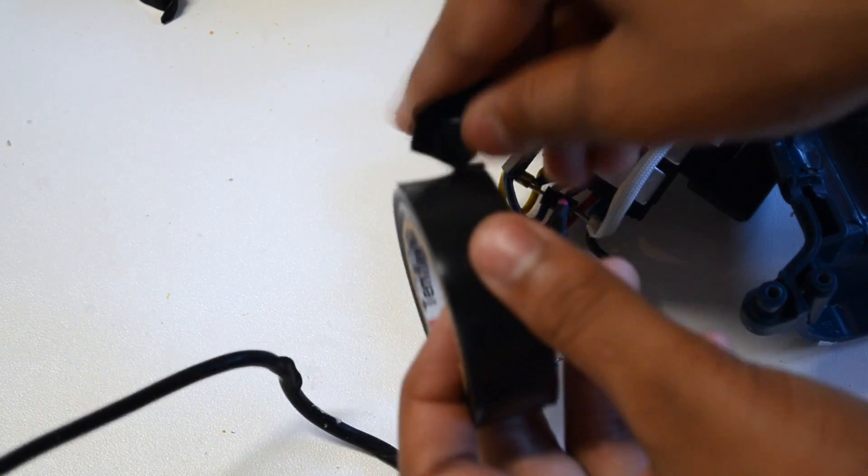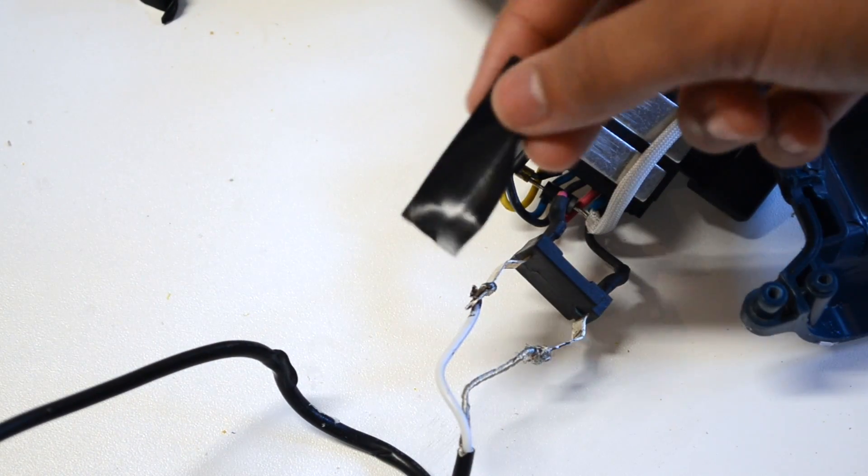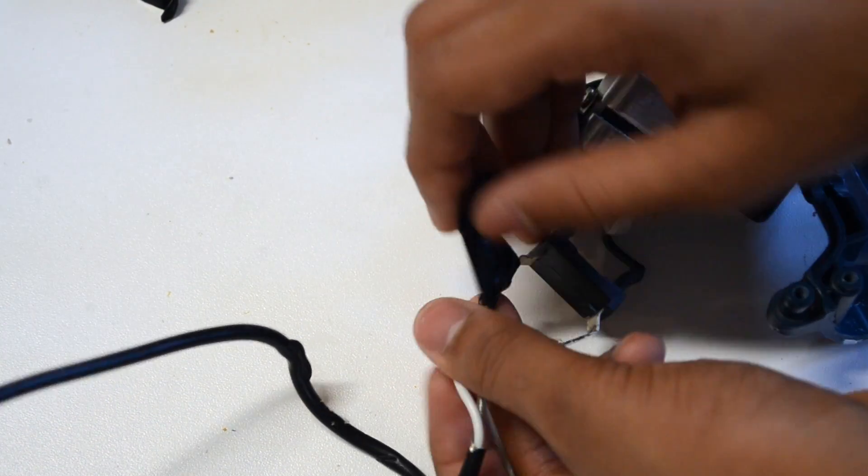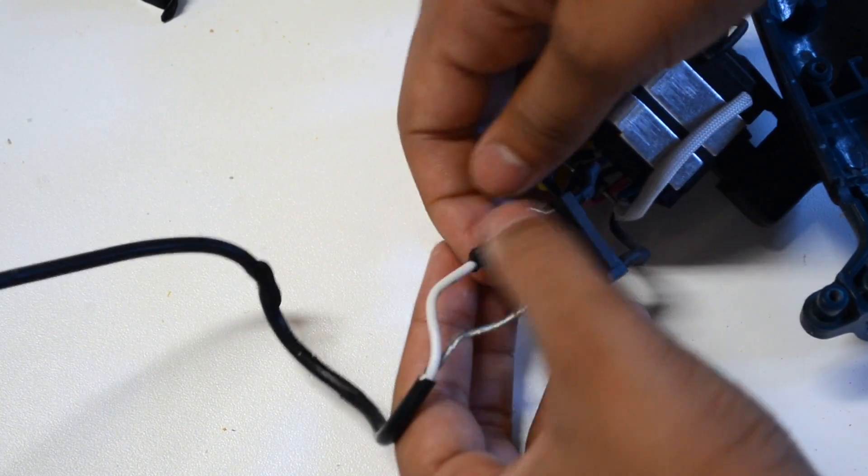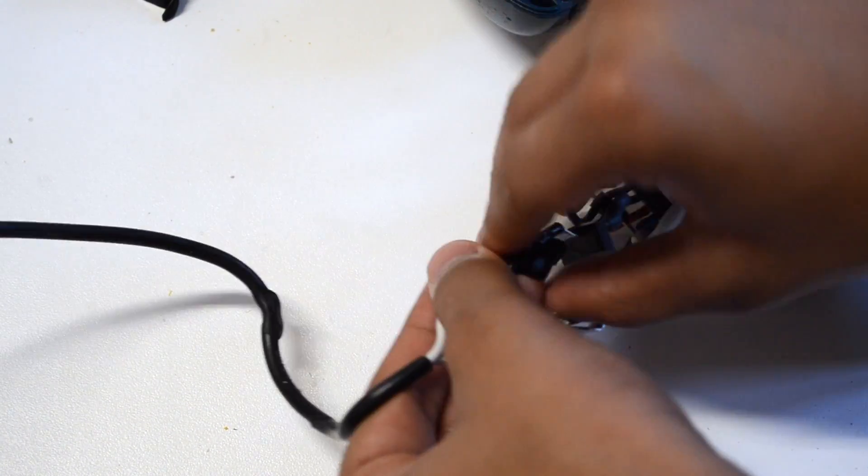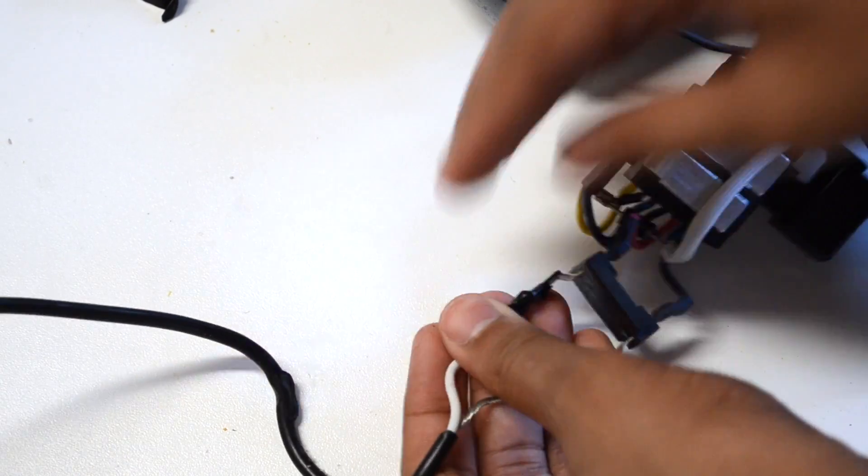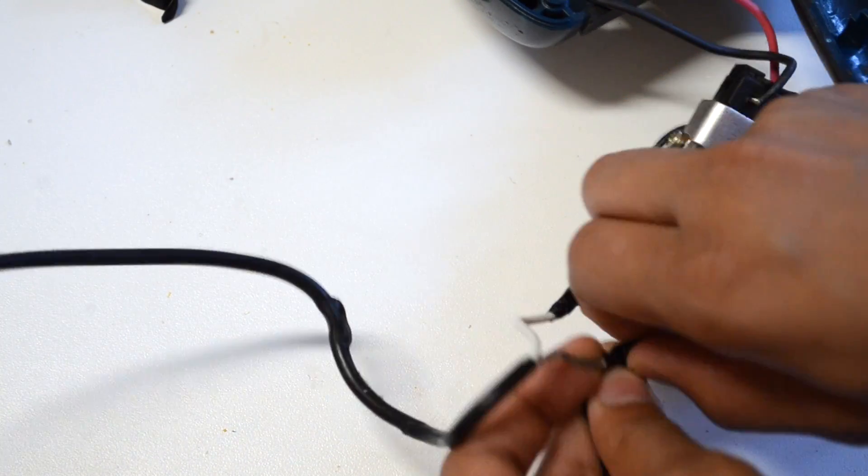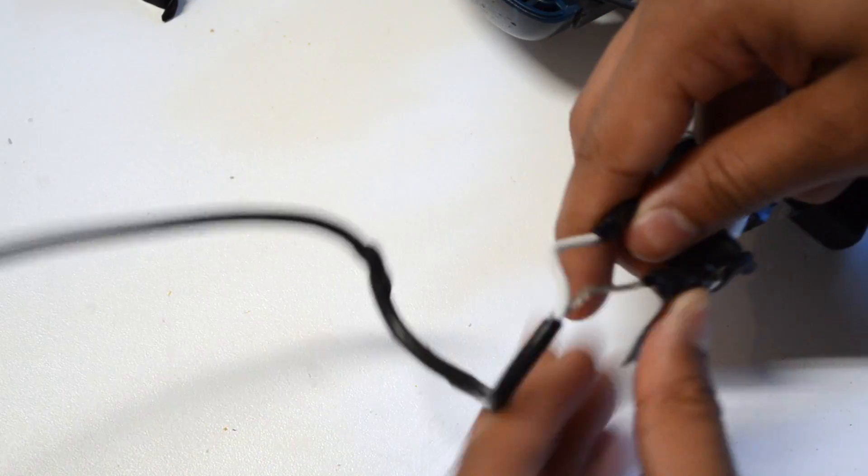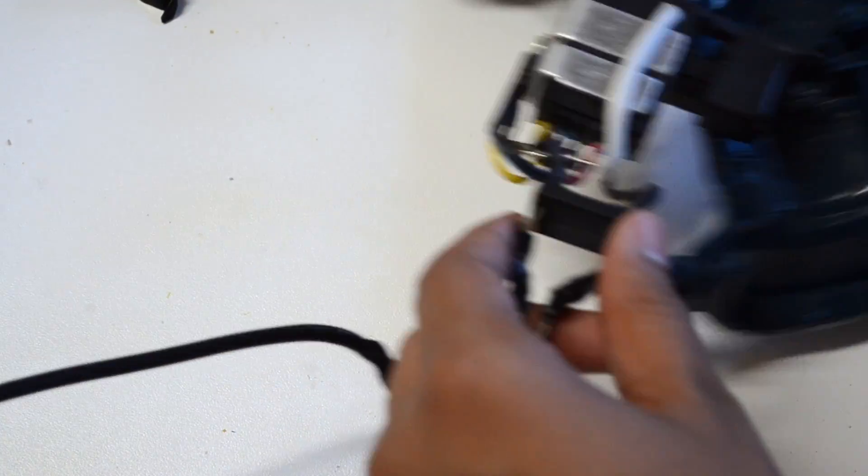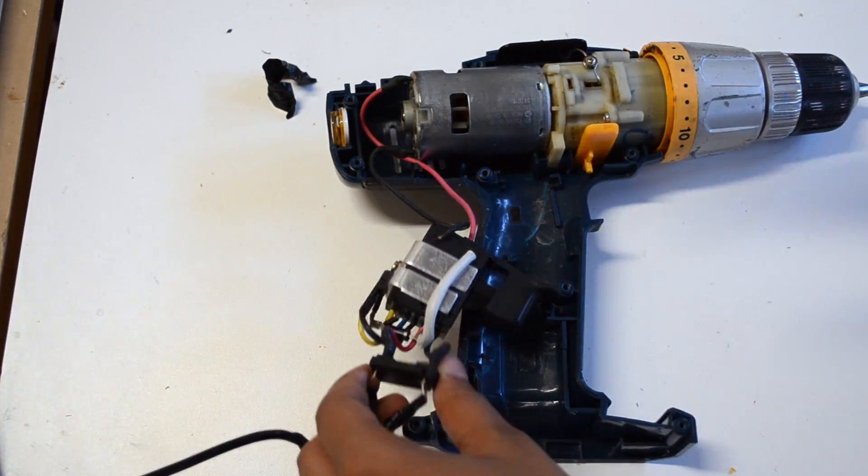After that I wrapped up the exposed wiring with electrical tape to keep the wires from touching and short circuiting. After that's done you can start reassembling the drill.